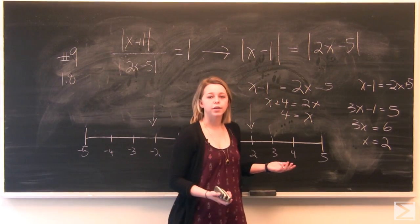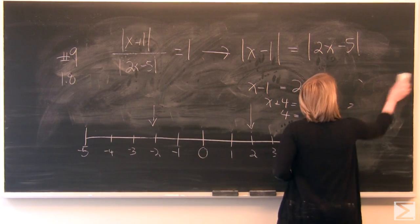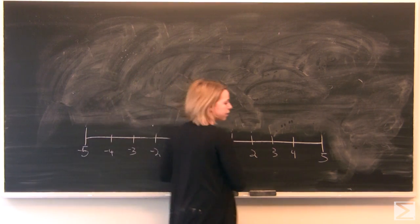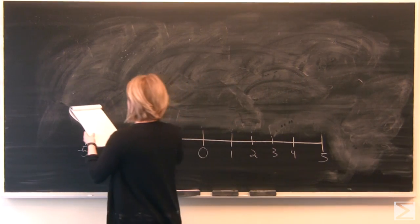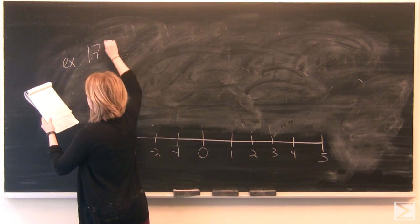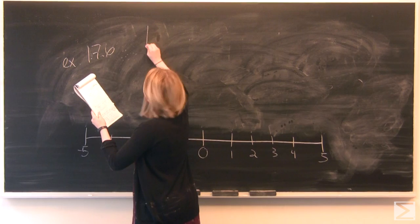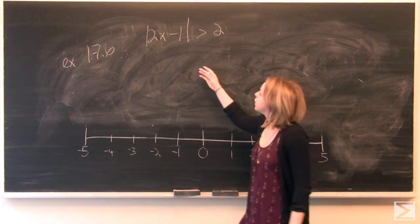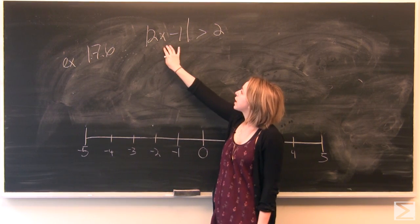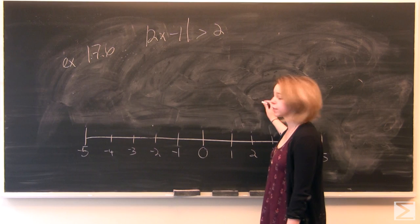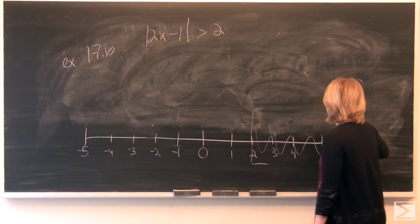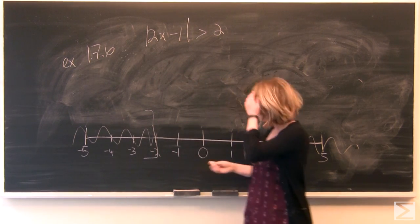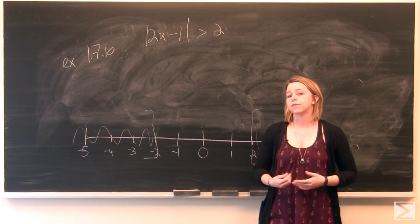Now, what if we have an inequality instead? When solving an inequality involving absolute value, we'll look at example 1.7.6 from our precalculus textbook, which states that the absolute value of 2x minus 1 is greater than 2. We're looking for x values that make 2x minus 1 more than 2 units away from 0 — that means greater than positive 2 or less than negative 2.